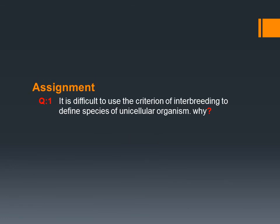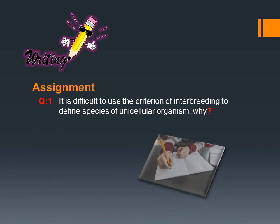Dear students, I hope you have a good understanding of this lecture. Here is a question for home task: it is difficult to use the criterion of interbreeding to define species of unicellular organisms — why? For this question, you can take help from the info box on species on page number 36 of your book.